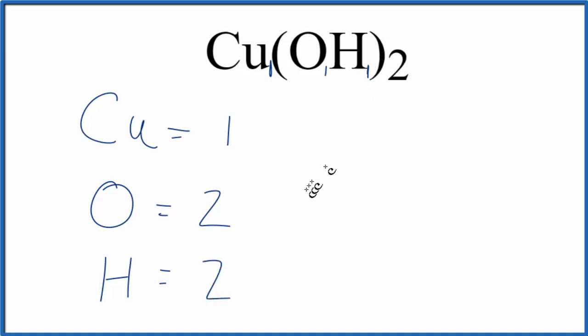So if you wanted to find the total number of atoms in Cu(OH)₂, that'd be two plus two plus one, or five atoms.